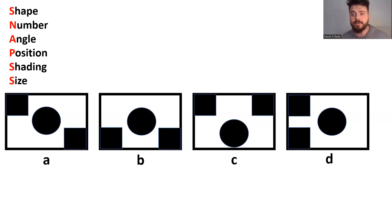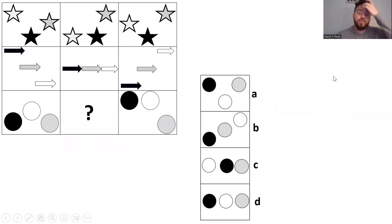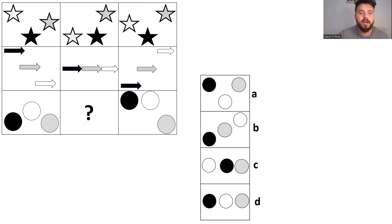Now we're going to move on to a new type of non-verbal reasoning. Remember, the link in the description has more examples of these questions for practice. Let's move on to the type you might know as grids or pictures — don't worry too much about the names as they can change from exam to exam. Remember the process and the way we solve each type.